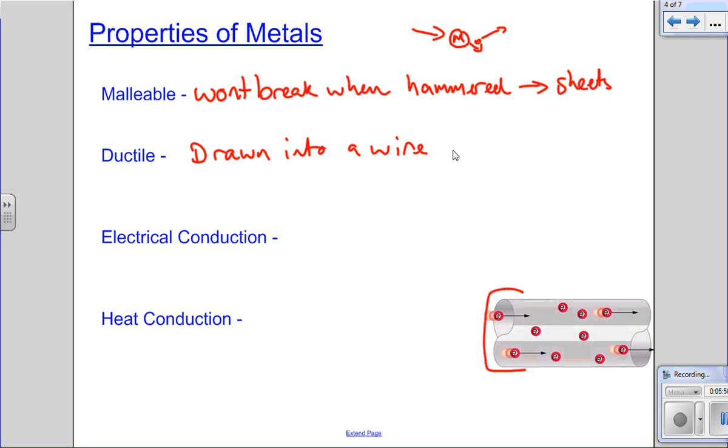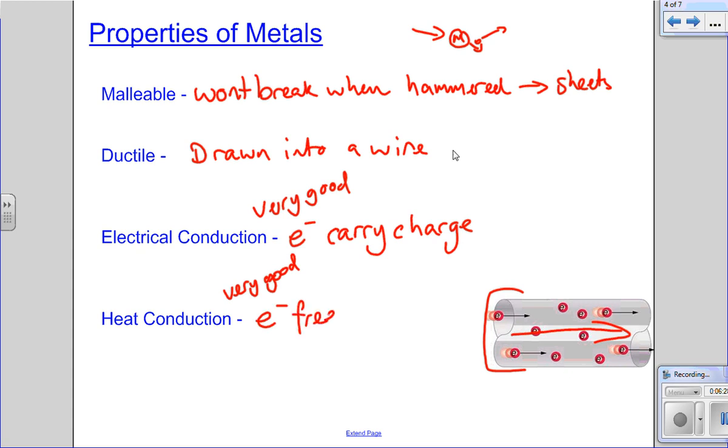Now, electric conduction. And this is what we've got here. The electrons can carry a charge. And because they're free to move, this means the electrons are able to move through a wire in a direction. With heat conduction, it's very good conductance of both heat and electricity. And again, because the electrons are free to move, they're able to transfer that heat energy rapidly.